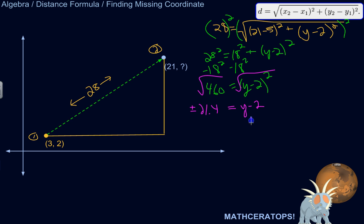So now we've got y minus 2 over here. Okay, so we're going to add 2 to both sides. So if this is positive 21.4, then we'll get, so 21.4 plus 2 is 23.4. And if this is negative 21.4 plus 2, that would be negative 19.4. So those are the two possibilities here.